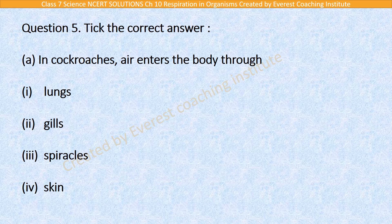Question number 5, take the correct option. Part A: In cockroaches, air enters the body through lungs, gills, spiracles, or skin. Cockroaches breathe through spiracles. They have tracheal tubes. The opening part is spiracles. So the answer for cockroaches is spiracles — the third option.